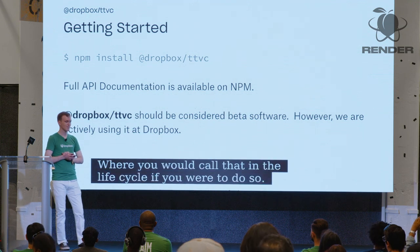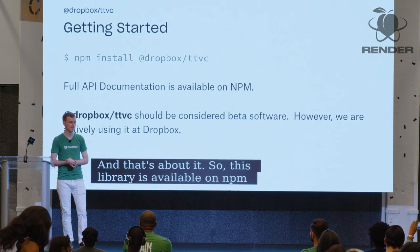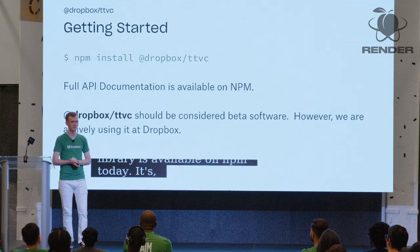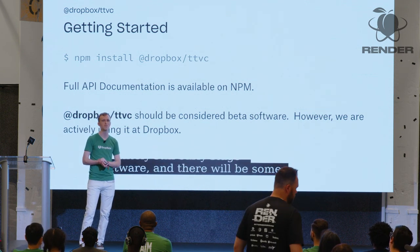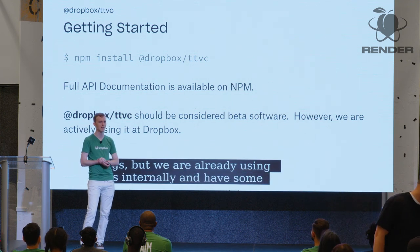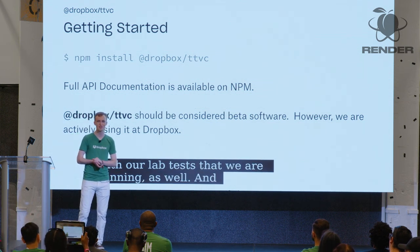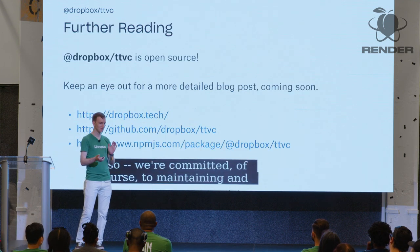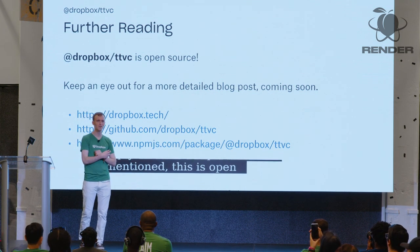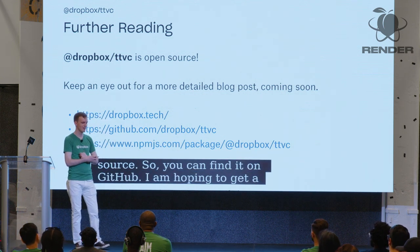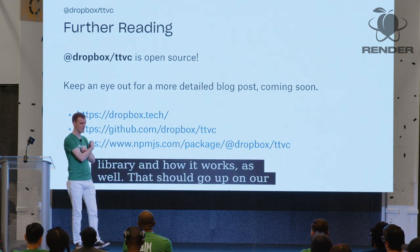And that's about it. This library is available on NPM today at Dropbox slash TTVC. Documentation is available there and on GitHub. This is definitely still early stage beta software and there will be some bugs, but we are already using this internally and have some confidence in it. It seems to be reporting data that matches up with our lab tests that we are running as well. We're committed to maintaining it and catching bugs, and we would love any assistance that anyone wants to supply on that.